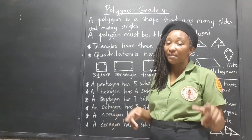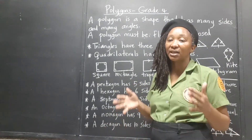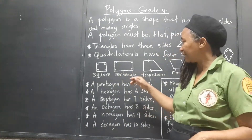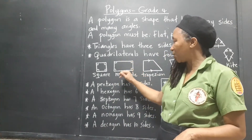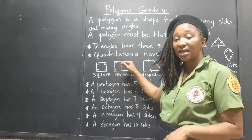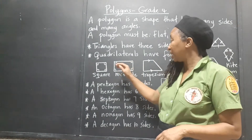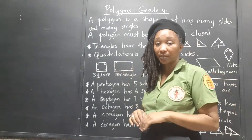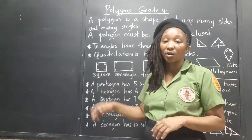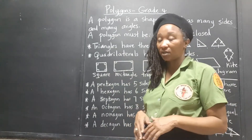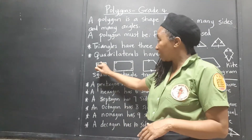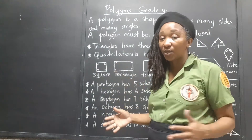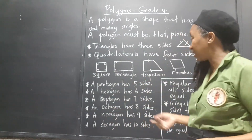The rectangle has parallel sides that are equal — these two sides are parallel and equal, and these two are parallel and equal. The square is just a special kind of rectangle where all sides are equal. The two parallel sides are still equal to each other, but all sides are equal in the square, making it a special type of rectangle.